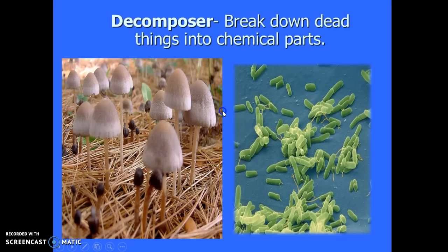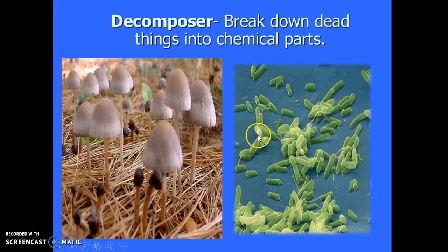At the very end of the food chain is the decomposer. A decomposer breaks down dead things back into soil — back into chemical parts that make up our soil. The biggest decomposers in an ecosystem are fungi, such as mushrooms, and bacteria. If you walk through a forest and see a dead tree on the ground, you'll see different kinds of fungi growing on it, breaking that log down into soil. You can't see bacteria doing its job because it's microscopic, but if you can't even recognize what the dead thing is, bacteria is doing its job, breaking it down into chemical parts we call soil.